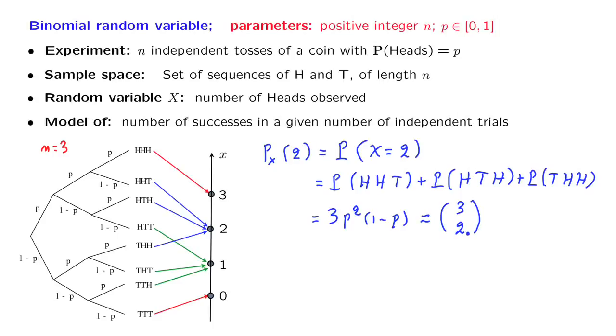3 is the same as 3 choose 2. It's the number of ways that you can choose two heads, where they will be placed in a sequence of three slots or three trials.